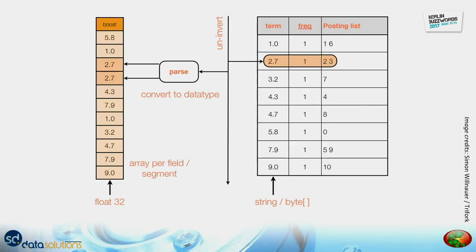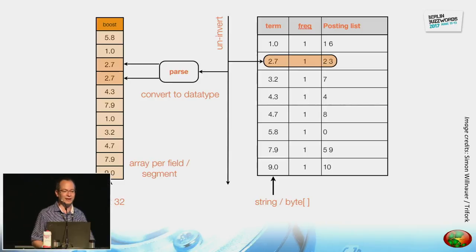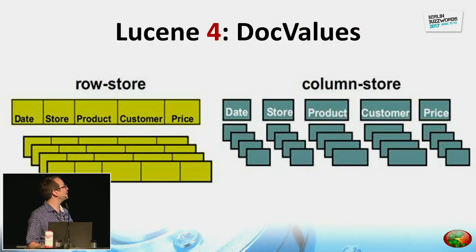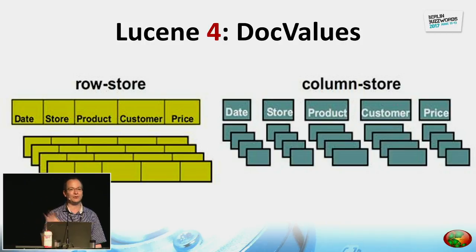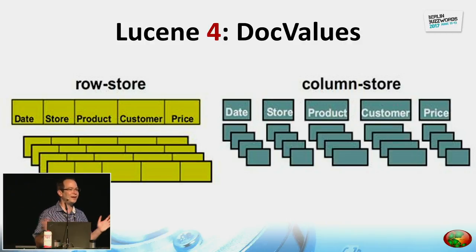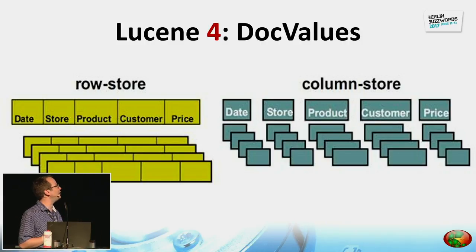Lucene and Solr in the early days used something called uninverting — it analyzed the terms and posting lists and created a large byte array, in that case a float array, by passing the values. Then if you have search results, you can quickly via random access get the correct value and use it for sorting. The idea was: how about simply writing that information to disk? That is when doc values came. Somebody might say we could also use stored fields, but stored fields are row-based — if you're reading a value you have to decompress everything, all the field values. With doc values, every column is separate and you can easily look up values for sorting, faceting, function queries, or whatever.